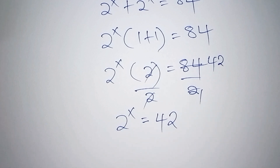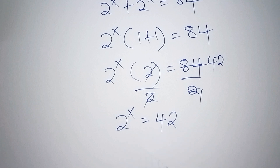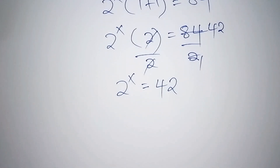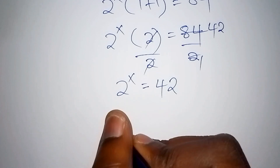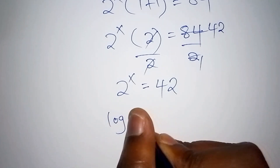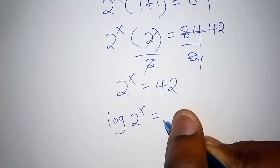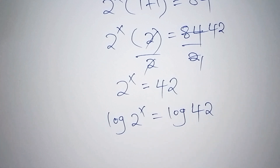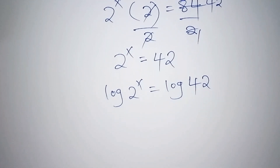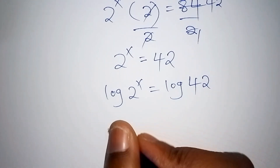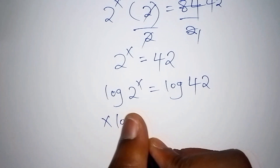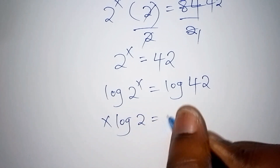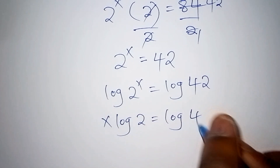Since we cannot express 42 to the base of 2, we shall now use the log. We take the log of both sides: log of 2 to the power of x equals log of 42. Using the power rule, this becomes x times log 2 equals log 42.